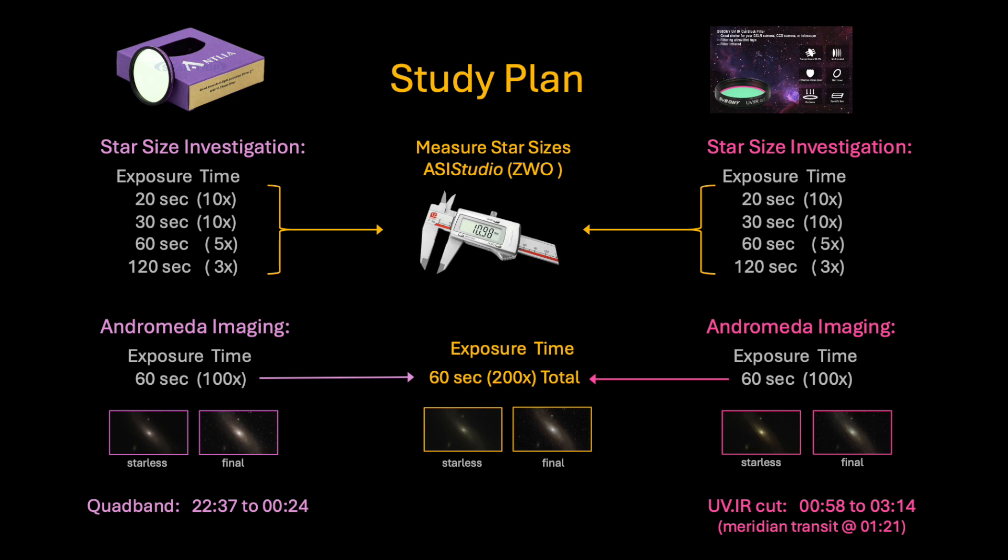The reason I am interested in star size analysis is because the quad band filter passes high wavelength infrared light, which has a side effect of increasing star sizes on your images. I wanted to see how much it bloats the stars relative to a UV-IR cut filter. And in the second stage of this study, I imaged the Andromeda galaxy with both filters, capturing as much data as possible while it rose above the rooftops of the surrounding houses in my backyard. The actual imaging times for these filters during that night are displayed at the bottom of the slide. For fun, I also included a combination image with 200 minutes of integration time.